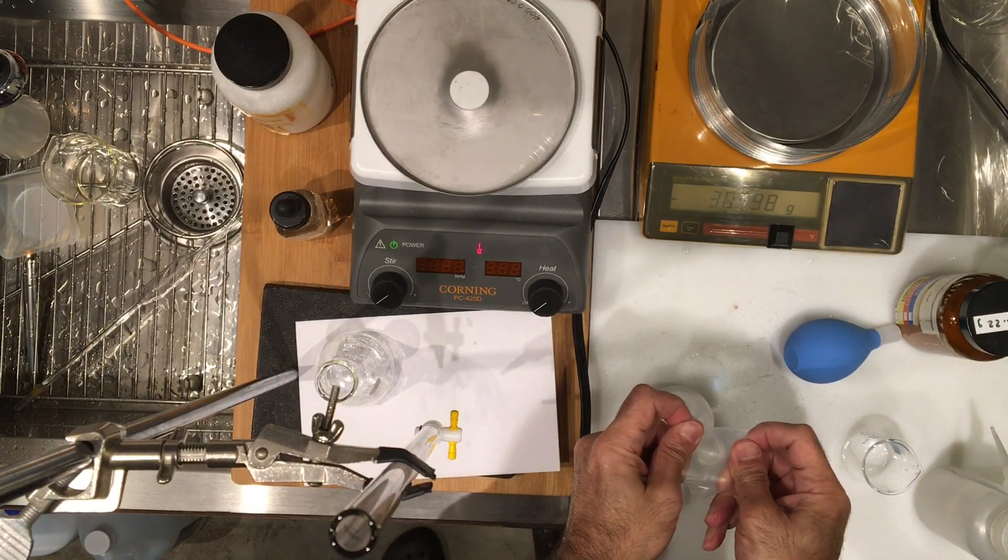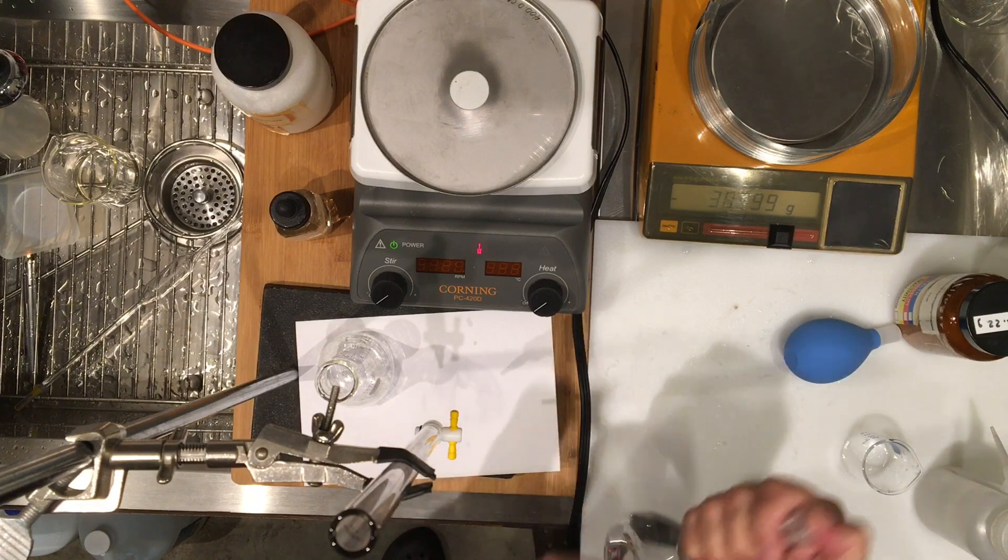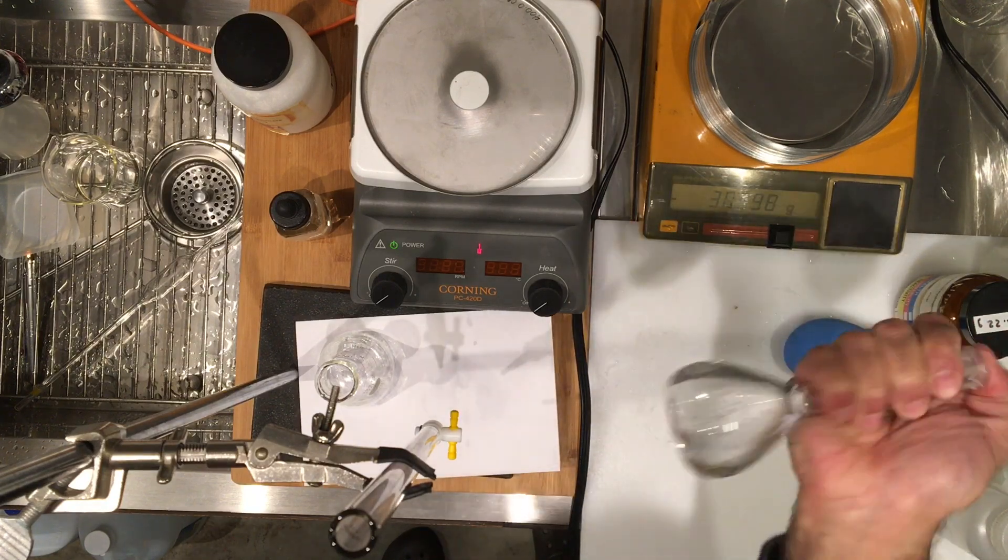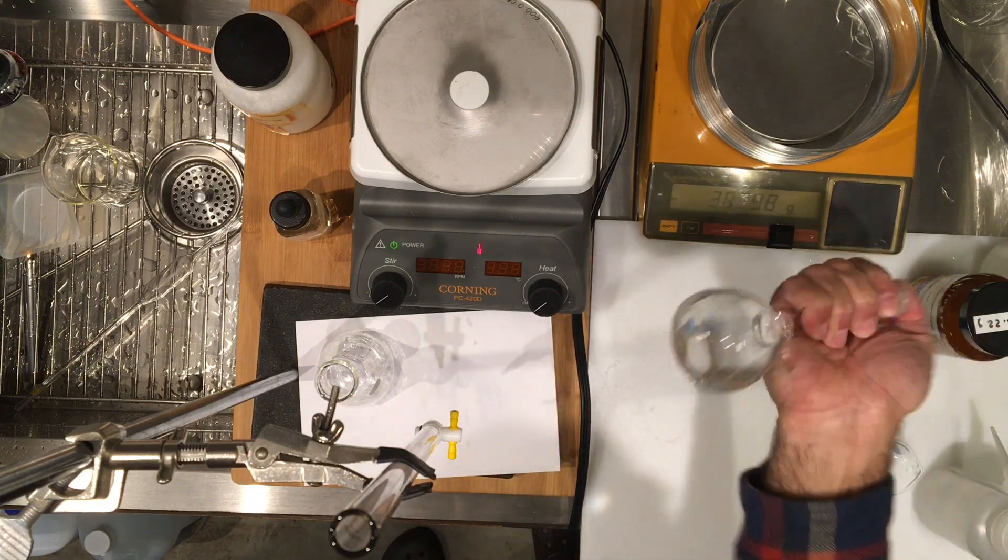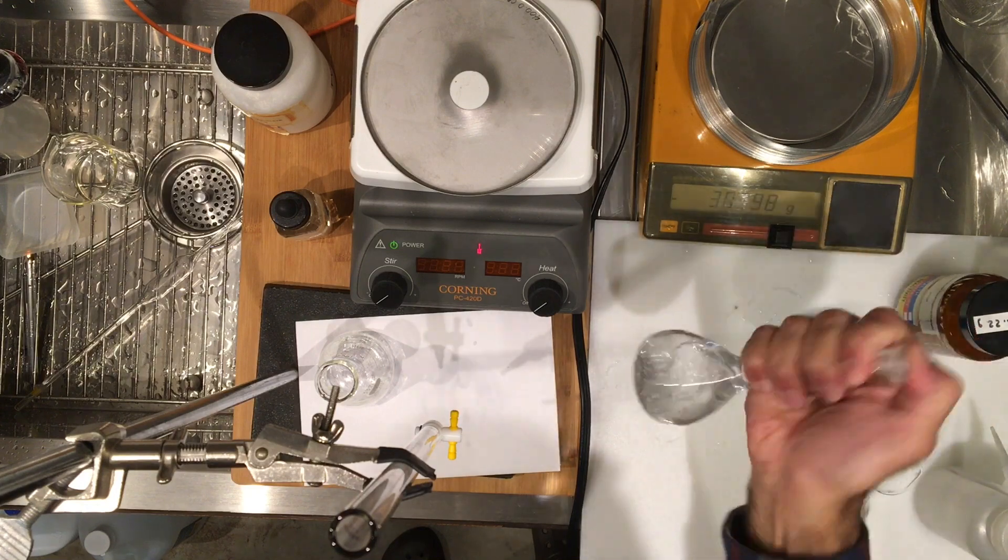So I stretch the parafilm over the flask, and I mix this a few times up and down, and this will mix my vinegar with the water so it's diluted to a known concentration.